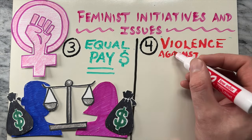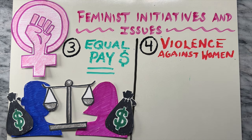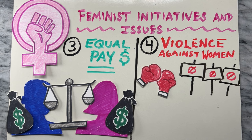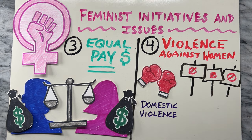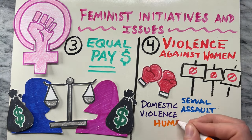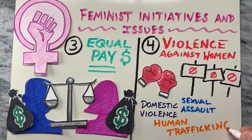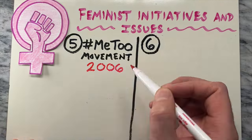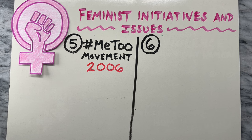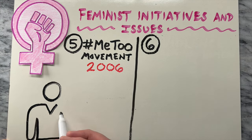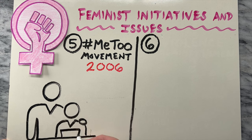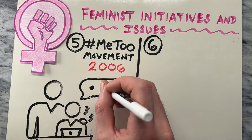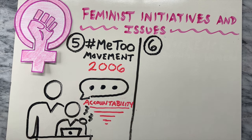Then there's a focus on violence against women. Feminist campaigns work to raise awareness about and combat various forms of violence against women, including domestic violence, sexual assault, and human trafficking. Next is the hashtag Me Too movement, which began in 2006. The Me Too movement emerged as a feminist campaign against sexual harassment and assault, providing a platform for survivors to share their experiences and demand accountability.